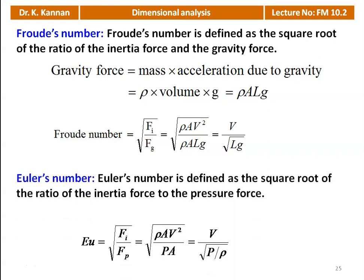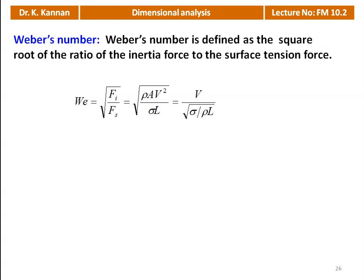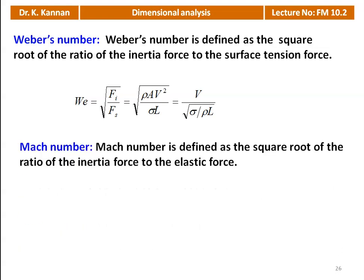The Euler number is defined as the ratio of inertia force to pressure force: Eu = Fi/Fp = ρAV²/(P×A) = V/√(P/ρ). The Weber number is the square root of the ratio of inertia force to surface tension force: We = √(ρAV²/σL) = V/√(σ/ρL). The Mach number is the square root of the ratio of inertia force to elastic force: M = √(ρAV²/KA) = V/√(K/ρ).